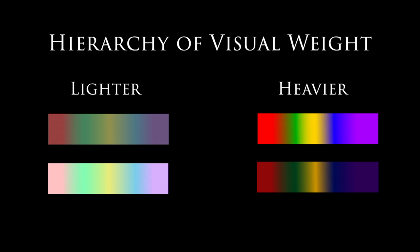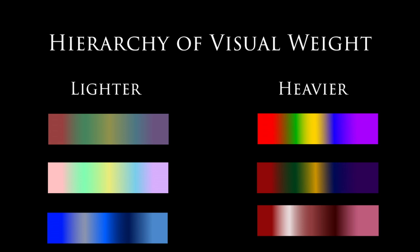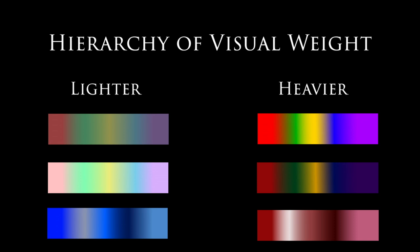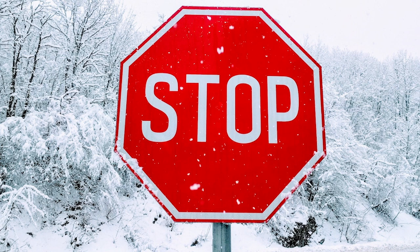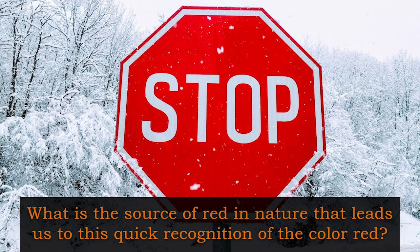We are much more attracted to bright saturated colors, therefore they appear visually weightier. Darker colors also feel heavier than lighter colors, so something darker in value has more visual weight than something lighter in value. Within their own inherent properties, some hues appear lighter or heavier than others.